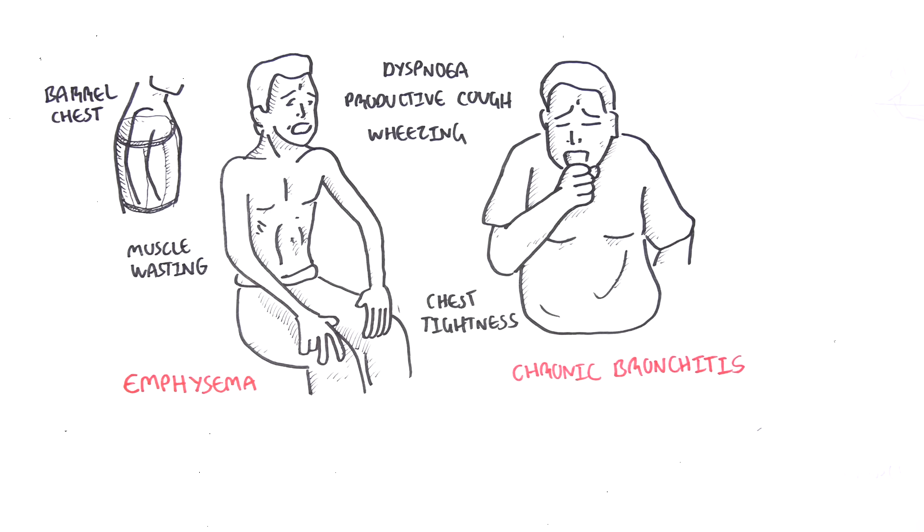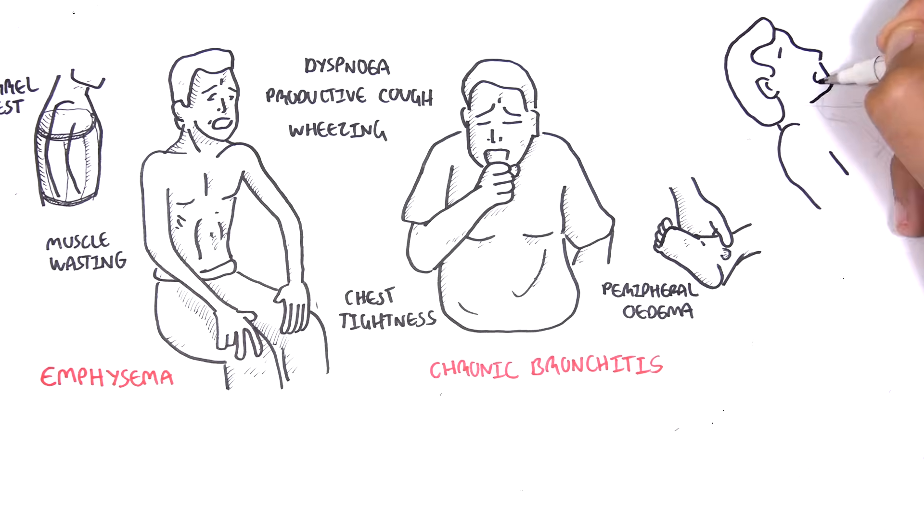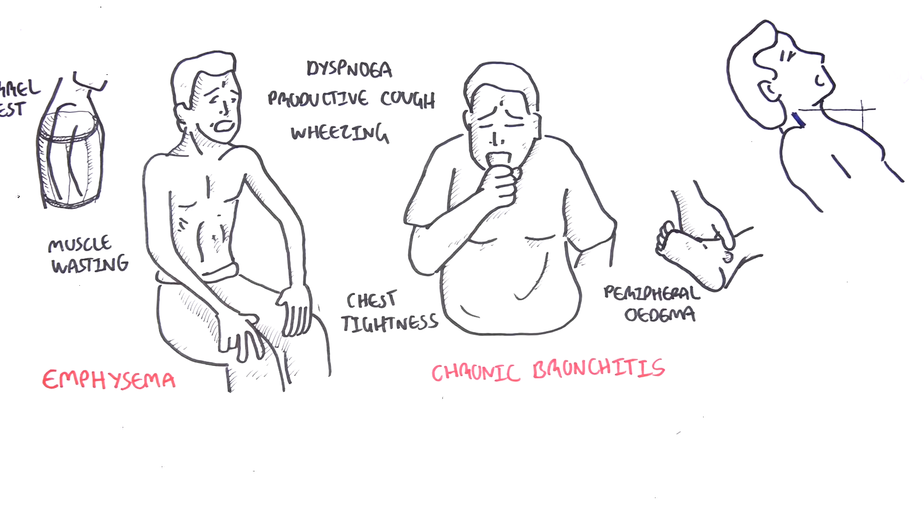Patients with pure chronic bronchitis can have peripheral edema and a raised JVP, due to a potential right-sided heart failure.